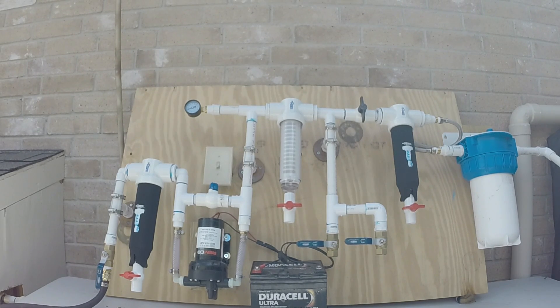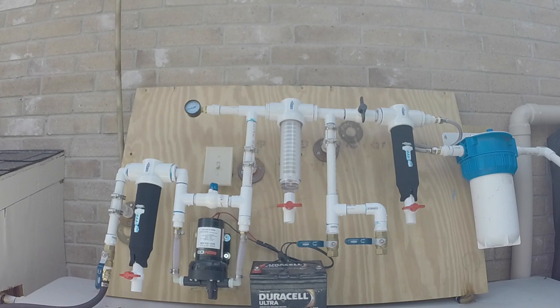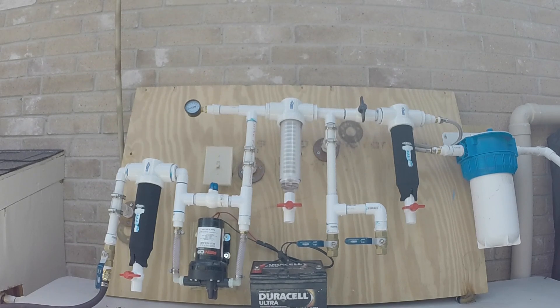Also, one other thing, Rusco spin down filters also have these really cool covers that you can get. And this is if you're going to have your system out in sunlight anywhere where algae could grow on the inside of your filters. This will prevent the algae from growing.